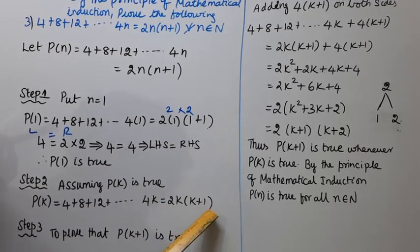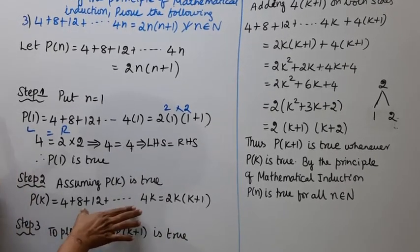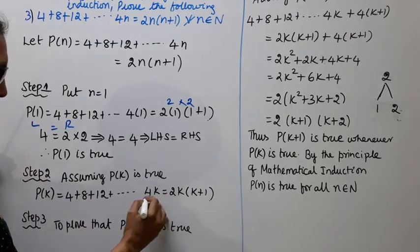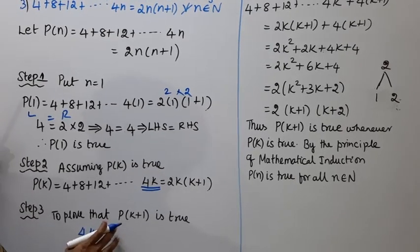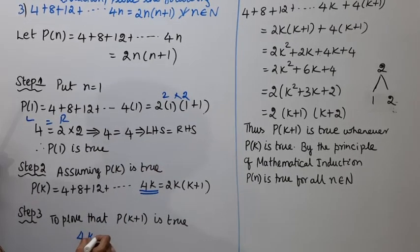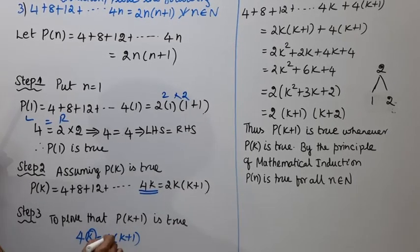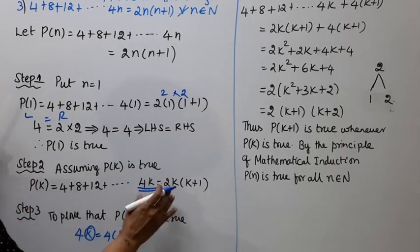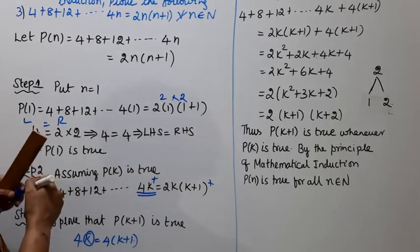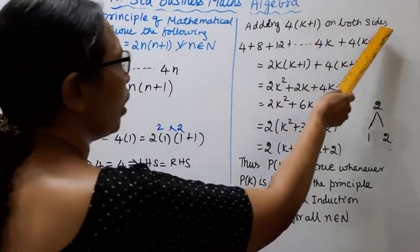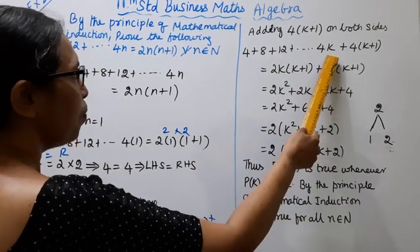Step 3: To prove that P(k + 1) is true. P(k + 1) left hand side: 4k + 4(k + 1). Right hand side: 2k(k + 1) + ...